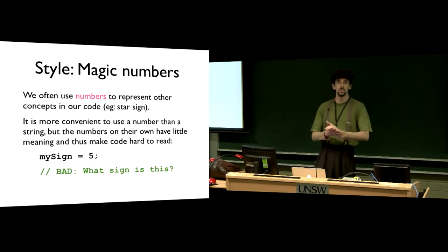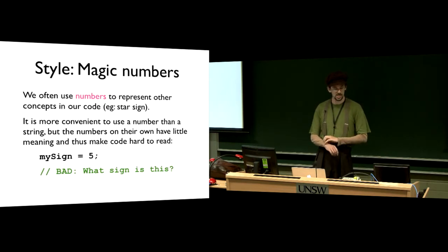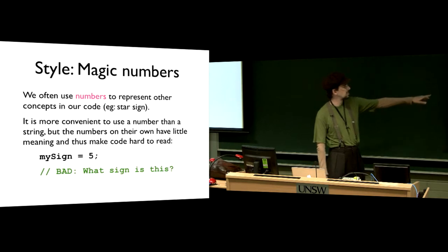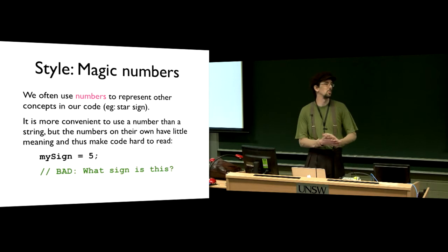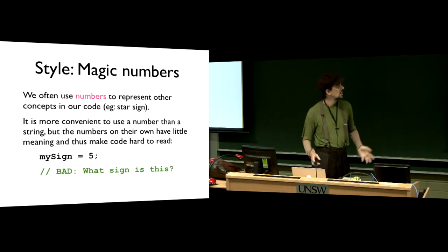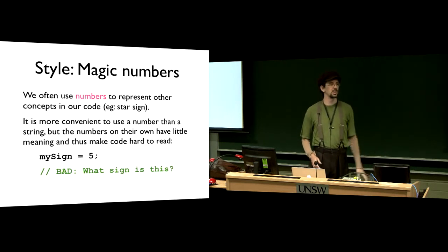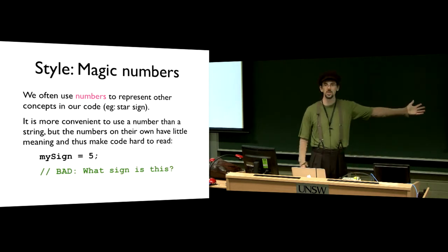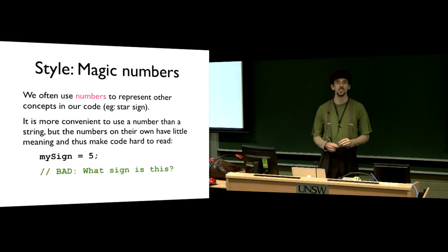We often use numbers to represent other ideas in our code. If we just have a bare number sitting on its own in the code, it's very hard to understand what that is. If we just said that my sign equals 5, it's not clear what 5 is. It depends on whether we're counting from 0 or 1 and whether we start counting at Capricorn or Aquarius or somewhere else. Saying my sign equals 5, while there's a good way internally to represent that information, is not a good way to make your code readable. This is what we call a magic number — a number in your code that has no apparent meaning.